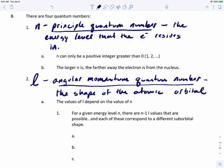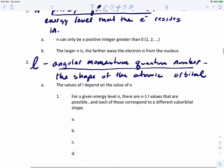Now the value of L depends on the value of n. So to find the highest value that L could be, if we take n and subtract one from this, that's going to tell us the highest value L could be.